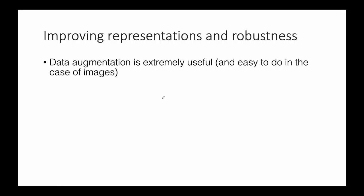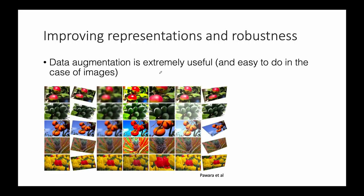In deep learning, not just in unsupervised learning, data augmentation is extremely useful. The idea is to artificially augment your training set, which is usually quite small. For instance, with images you can perform various transformations like randomly rotating the image, blurring it, or playing with contrast. If you were training a classifier, you'd be making it more robust — it would see the image in different lighting conditions or angles. In general, it's a really good idea and very effective.